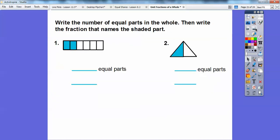Write the number of equal parts in the whole, and then write the fraction that names the shaded part. So, over here, let's see. We have 1, 2, 3, 4, 5, 6.